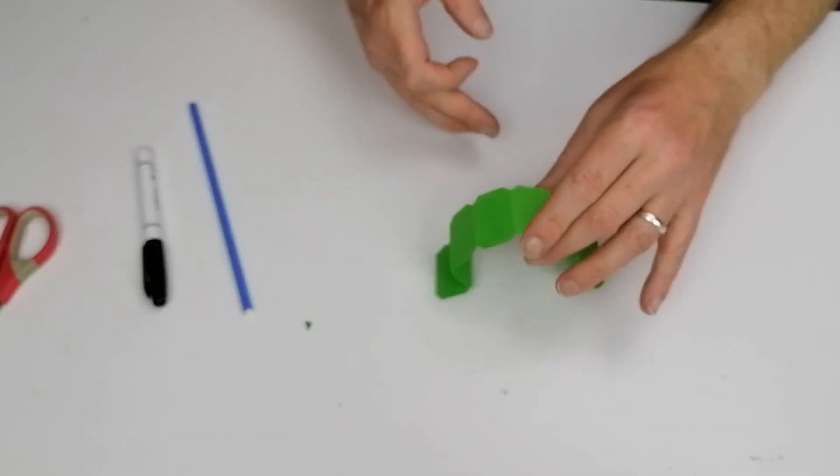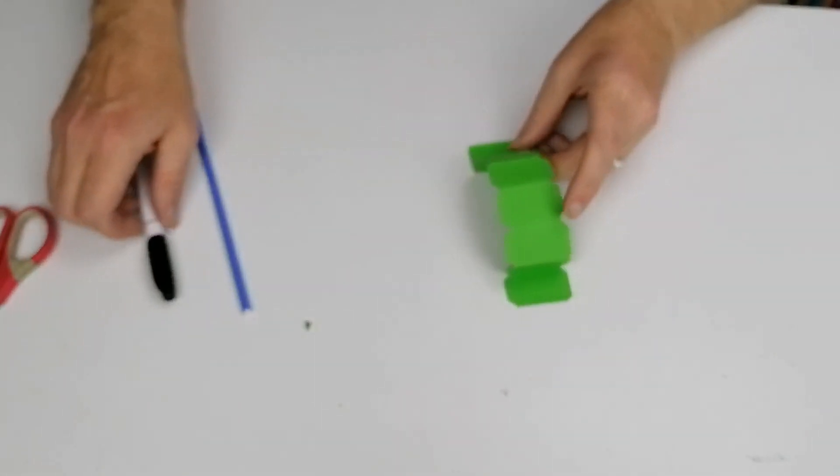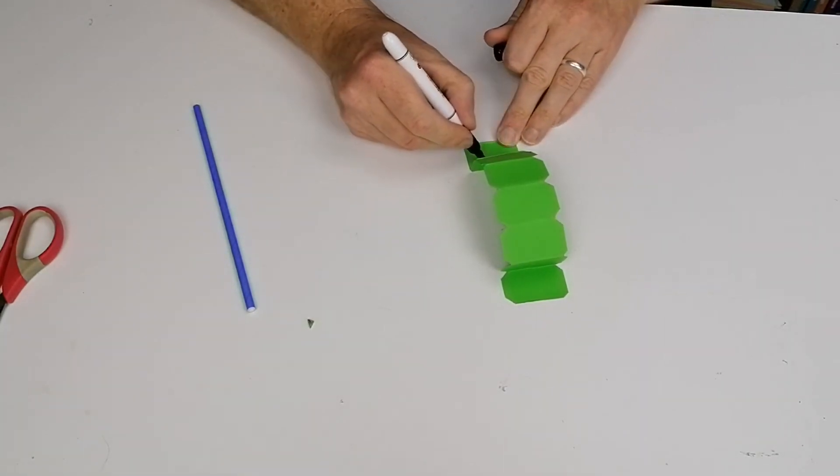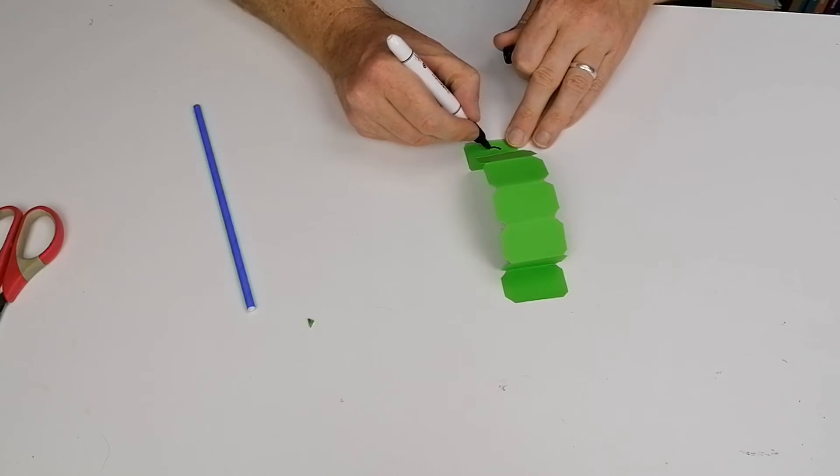You can see the caterpillar shape there. To make it nicer what you might want to do is put maybe a little face on this side, so I'm just going to put two eyes and a big smiley face. There's my caterpillar.